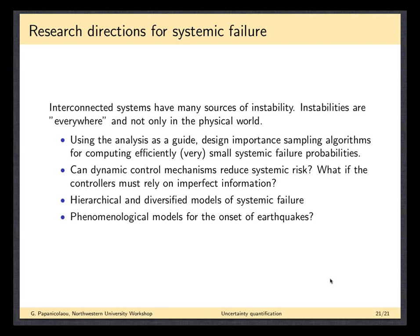One thing you can do is hide all the theoretical details and build a numerical algorithm from end to end where the rate function is built into the algorithm — that's what importance sampling is. This is something we are developing right now. Dynamic control mechanisms can help mitigate risk, though that's less relevant to geophysics where you can't intervene. Hierarchical and diversified models of systemic risk offer a vast number of other models to think about. And it just occurred to me: does this have anything to do with the phenomenology of earthquakes? That's my last comment.